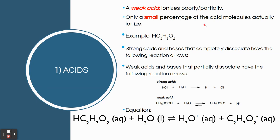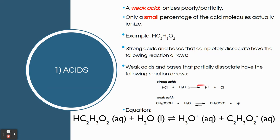A weak acid means only a small percentage of the acid is going to ionize. An example is acetic acid. For a weak acid plus H2O, we still show the ionization happening, but it's not all the molecules doing it. One way to differentiate strong from weak in a reaction equation is by looking at the arrows. For a strong acid or strong base, it's a one-way arrow — going 100% toward the ionization side. For a weak acid or weak base, we use a double arrow, indicating equilibrium: it's not 100% toward one side and goes back and forth.